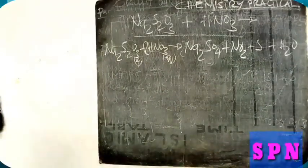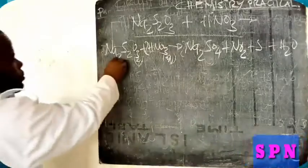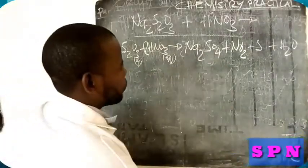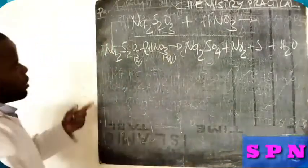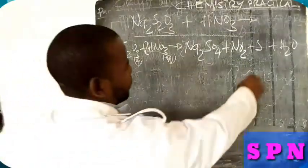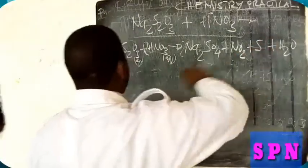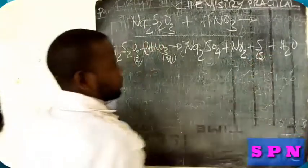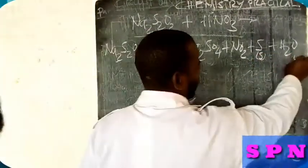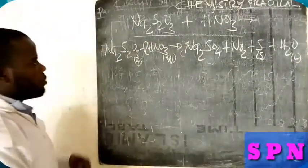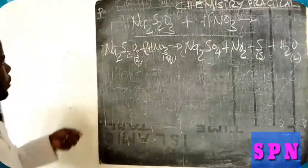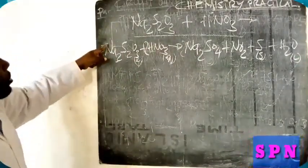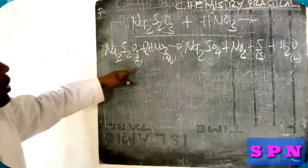When you balance, sodium is two here and here, it's two. So they have two sodiums, too. I think our reaction is balanced. This is the balanced equation. When you come to ionic equation, the spectator ions will be sodium.